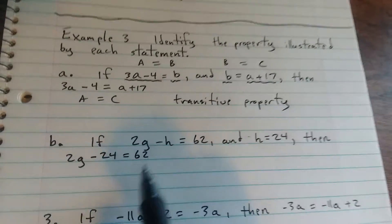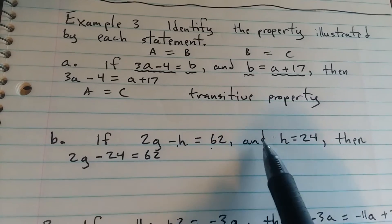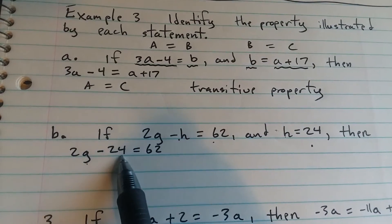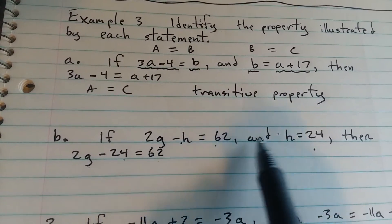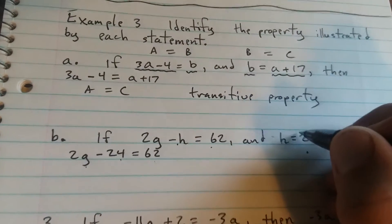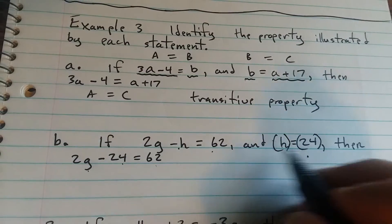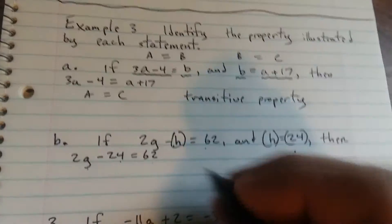Next one, if 2g minus h equals 62, and h equals 24, then 2g minus 24 equals 60. So what they did was they replaced the h with 24. They used this information here, and replaced h with 24. So this h right here is getting replaced with 24. That's substitution.